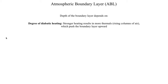Let's talk about some of the factors that influence the depth of the boundary layer. Probably the most pronounced is the degree of diabatic heating — that is, how much solar radiation the ground is absorbing. As the ground absorbs solar radiation, it heats up the adjacent air, and this heating results in rising motion, referred to as rising thermals, which are columns of relatively hot air ascending upward. As those columns ascend, they push the boundary layer upward, and eventually they'll encounter a point where they're no longer buoyant, and usually around that region is where the top of the boundary layer resides.